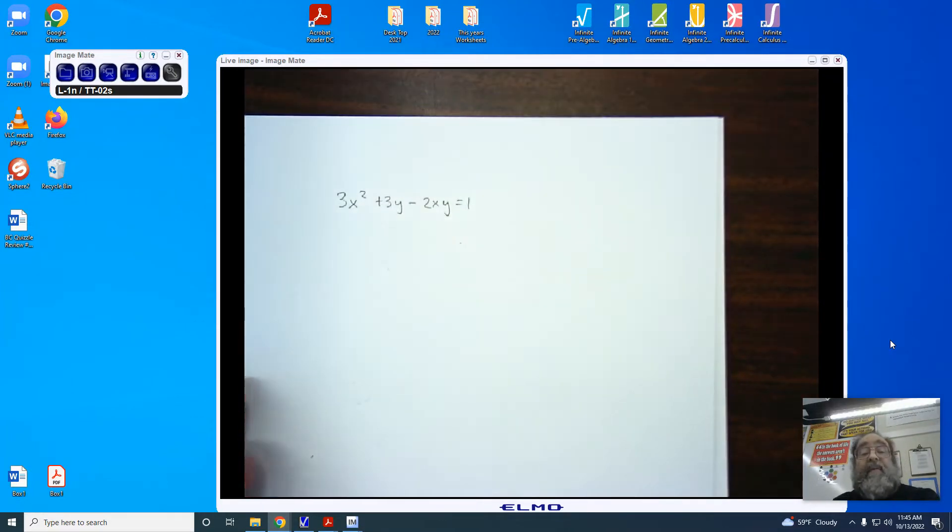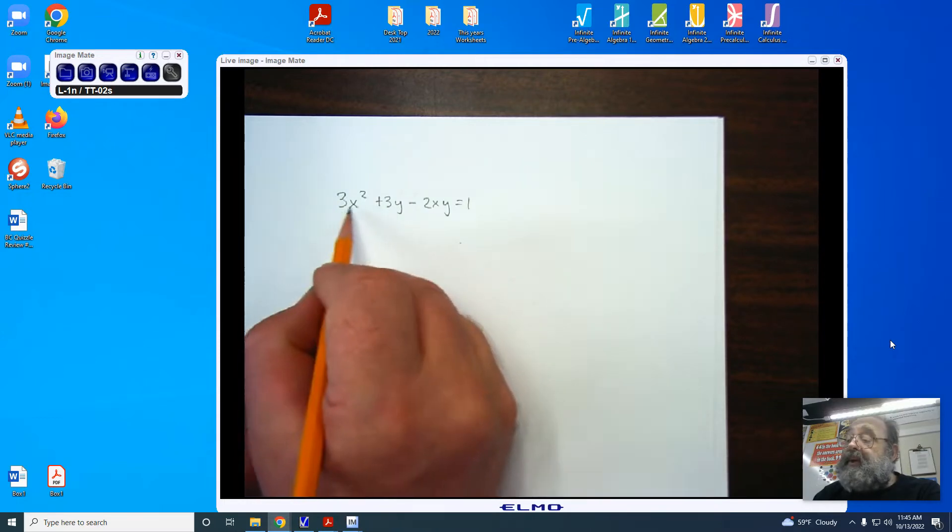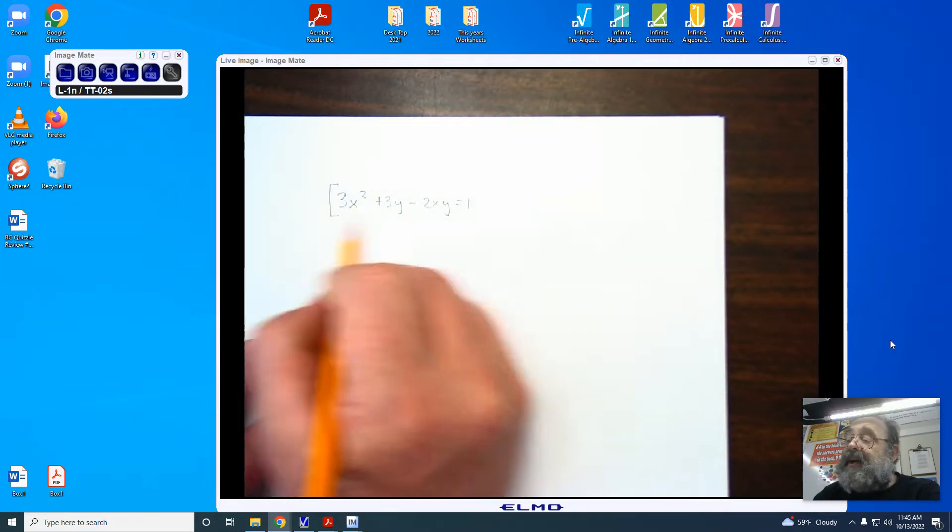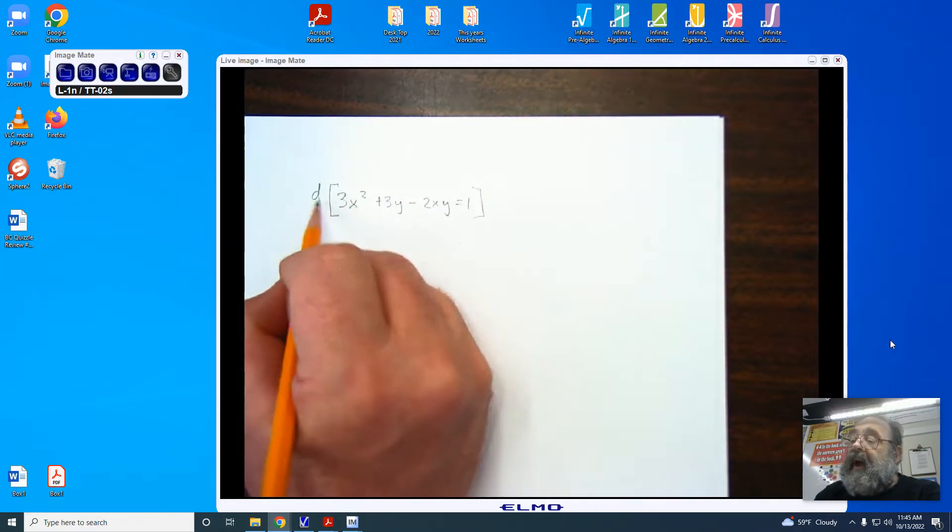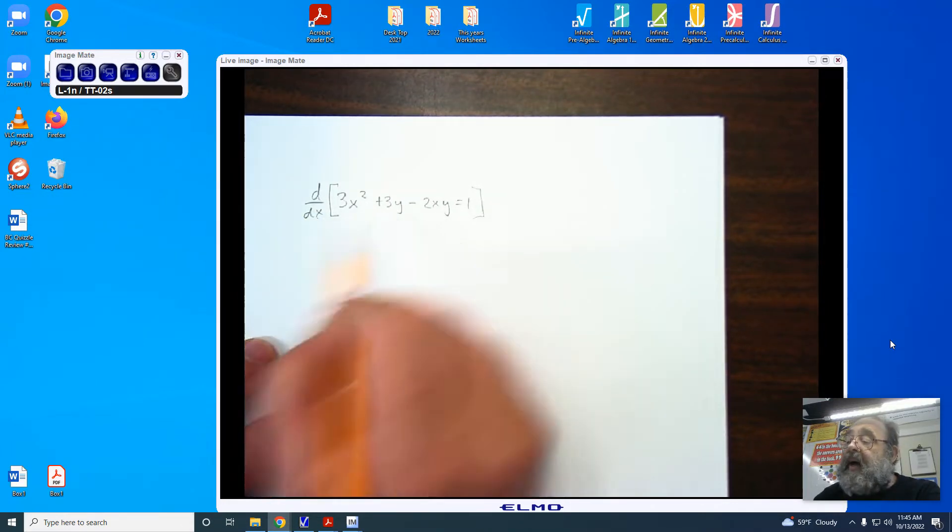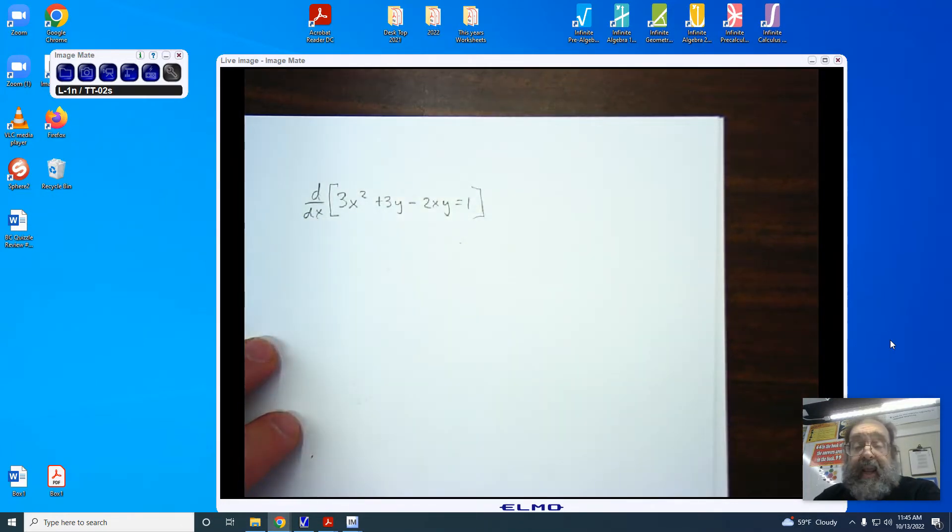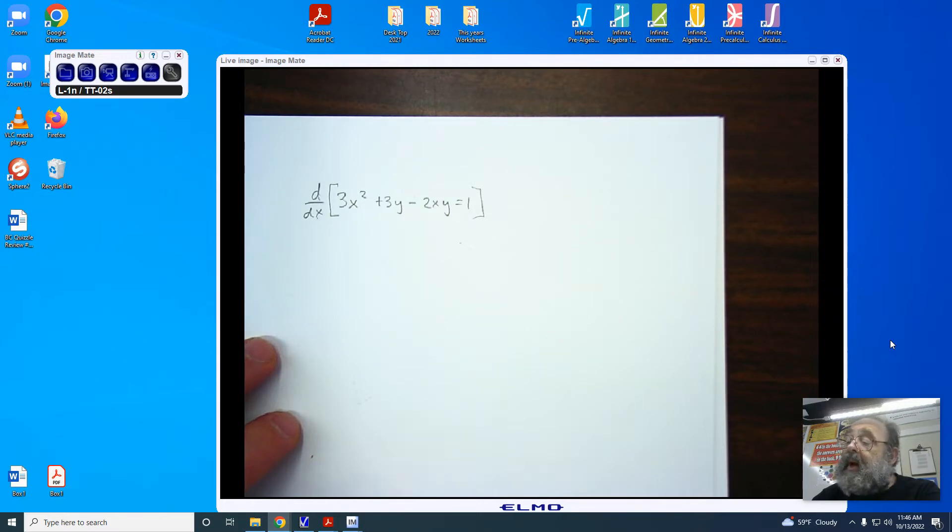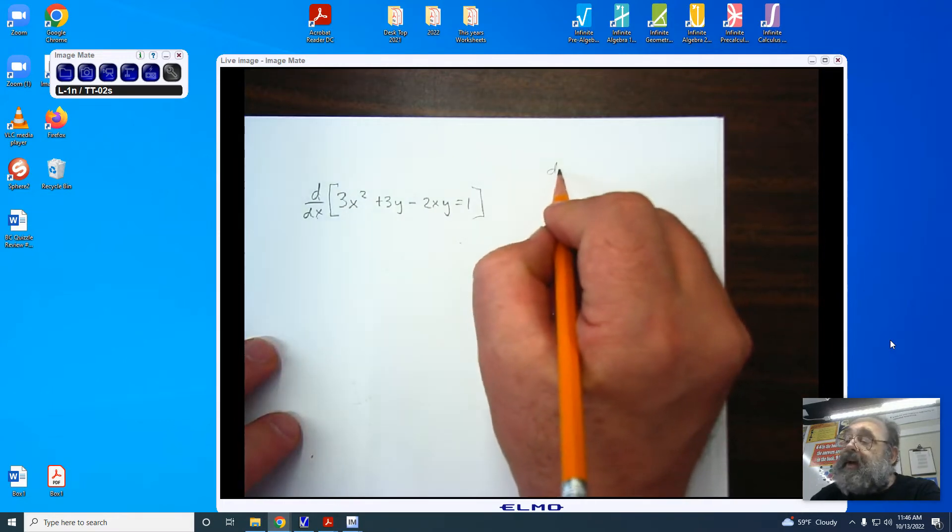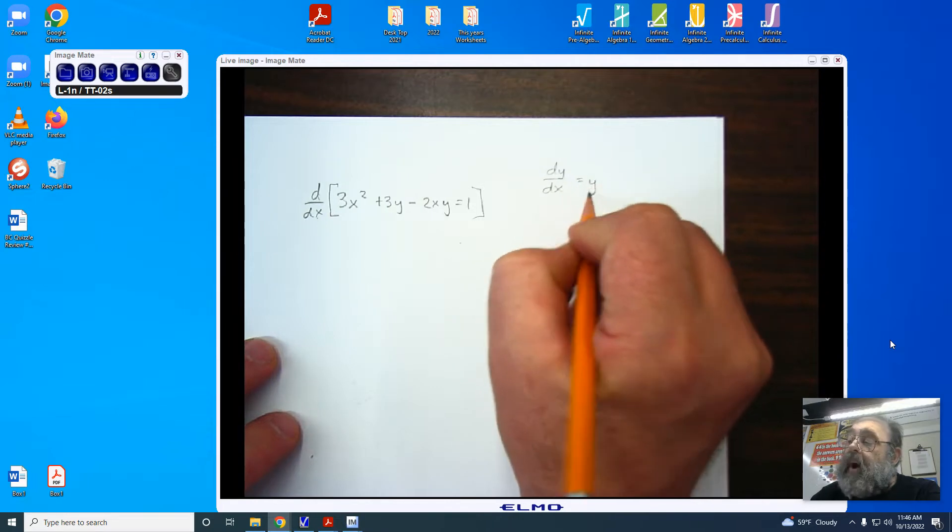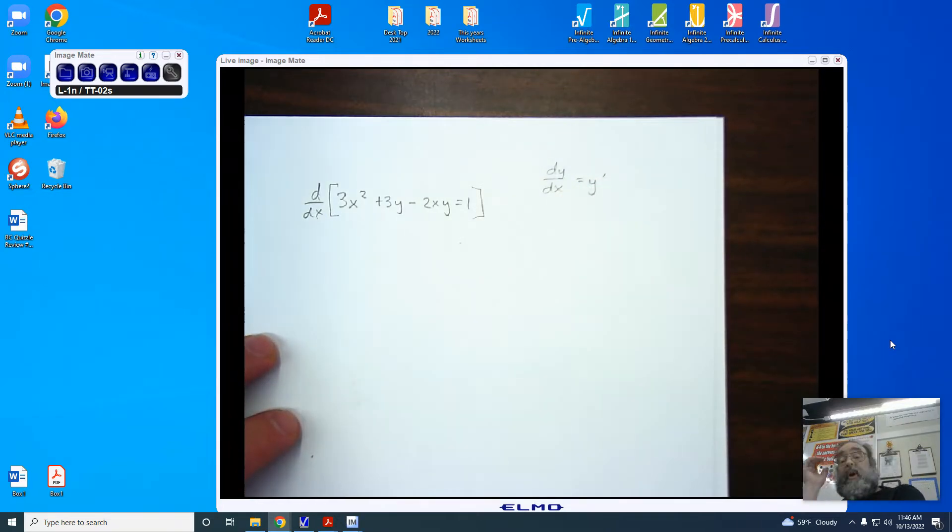We're going to start off by finding the implicit differentiation. To do this, we're going to be doing d dx, and we have to recognize that the y value is not the same. Because the y value is not the same, we're using the rule that says dy dx is y prime. If you wish, you can always use dy dx instead of y prime, but it does get a little bit ugly in its appearance.